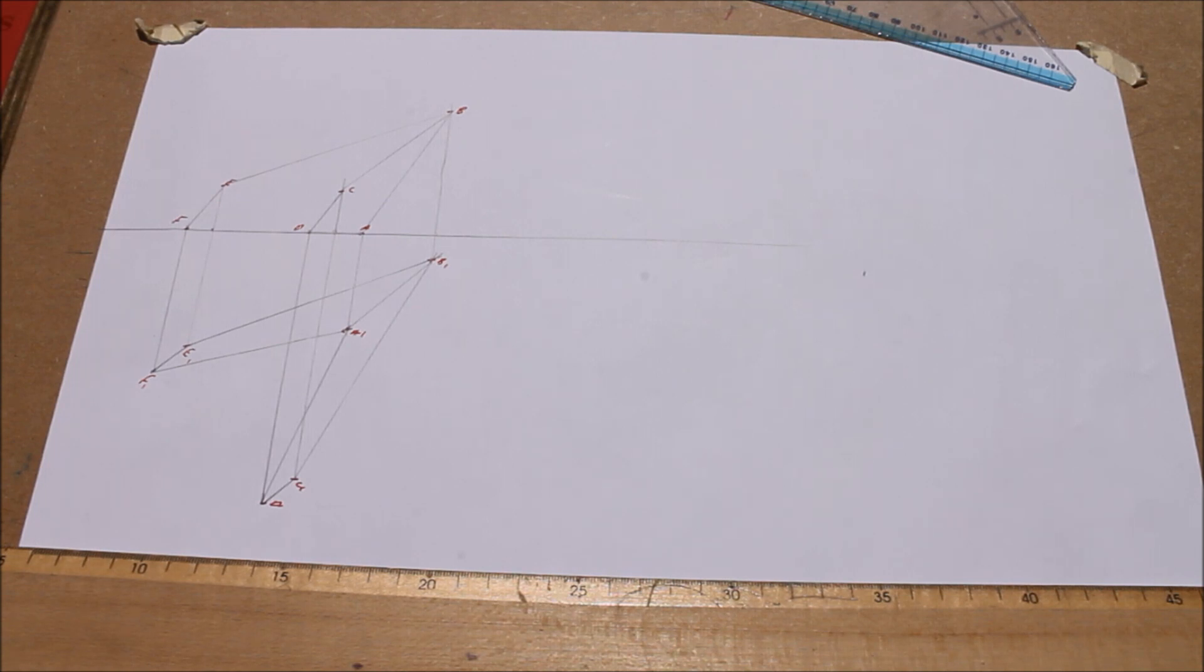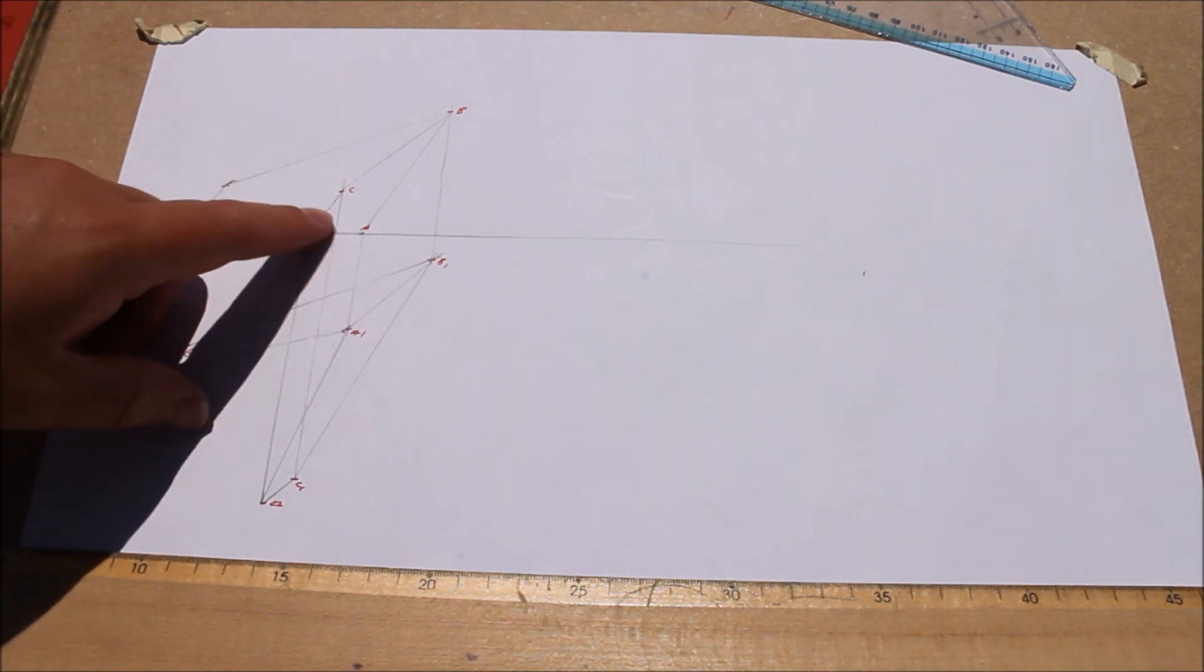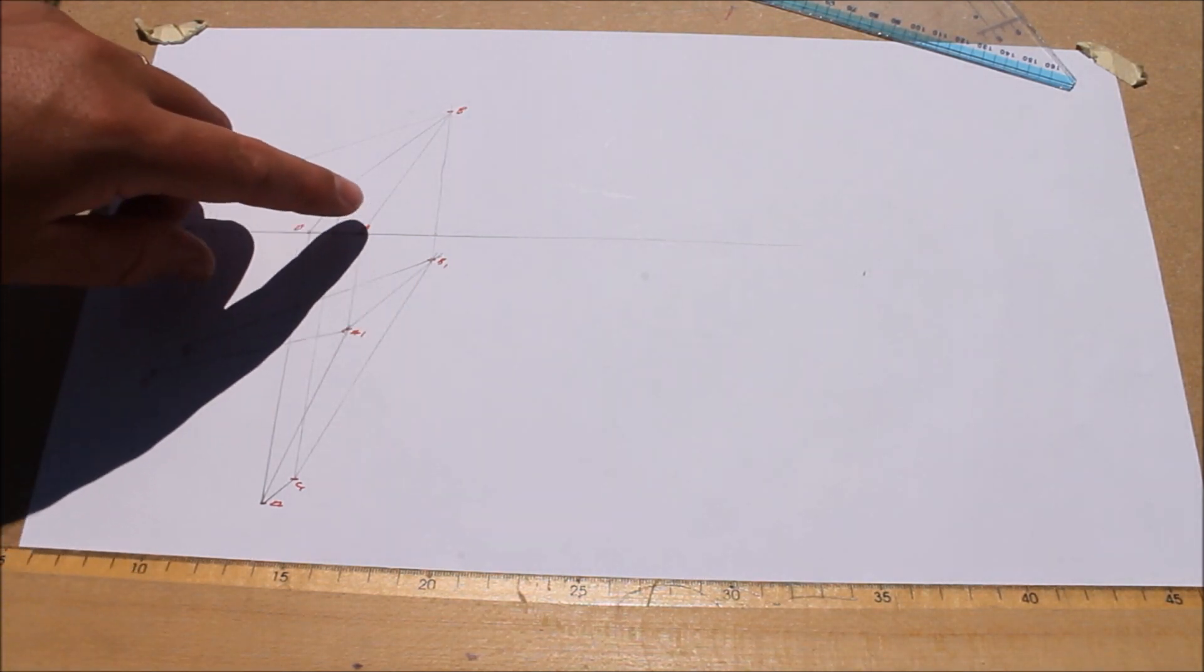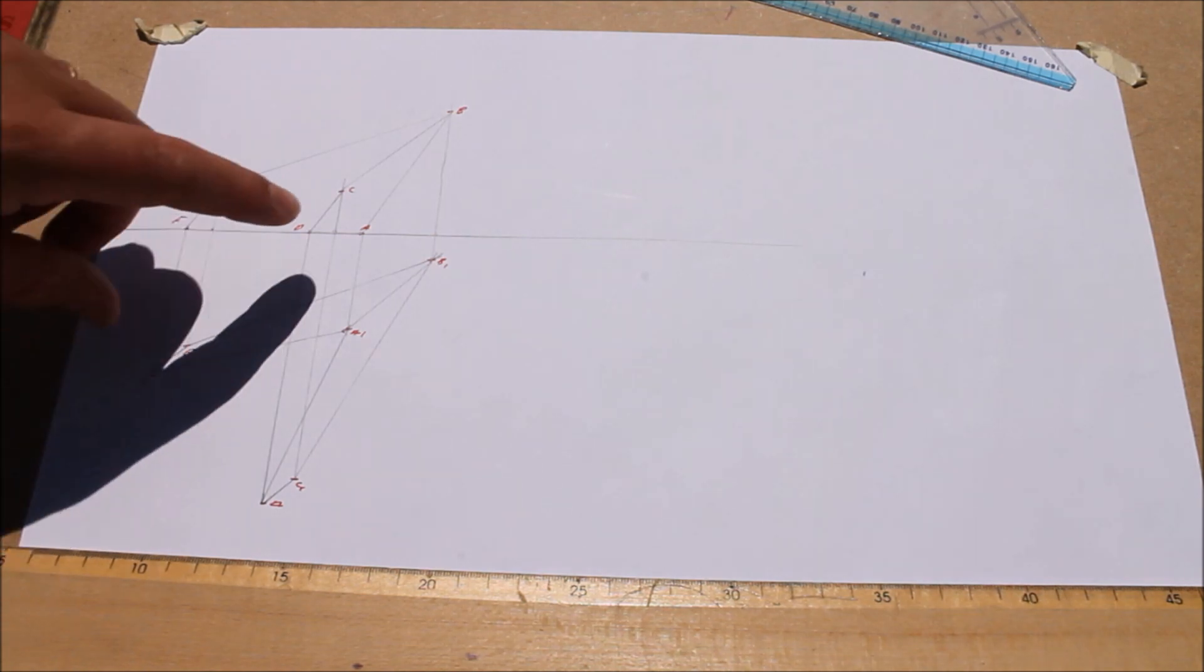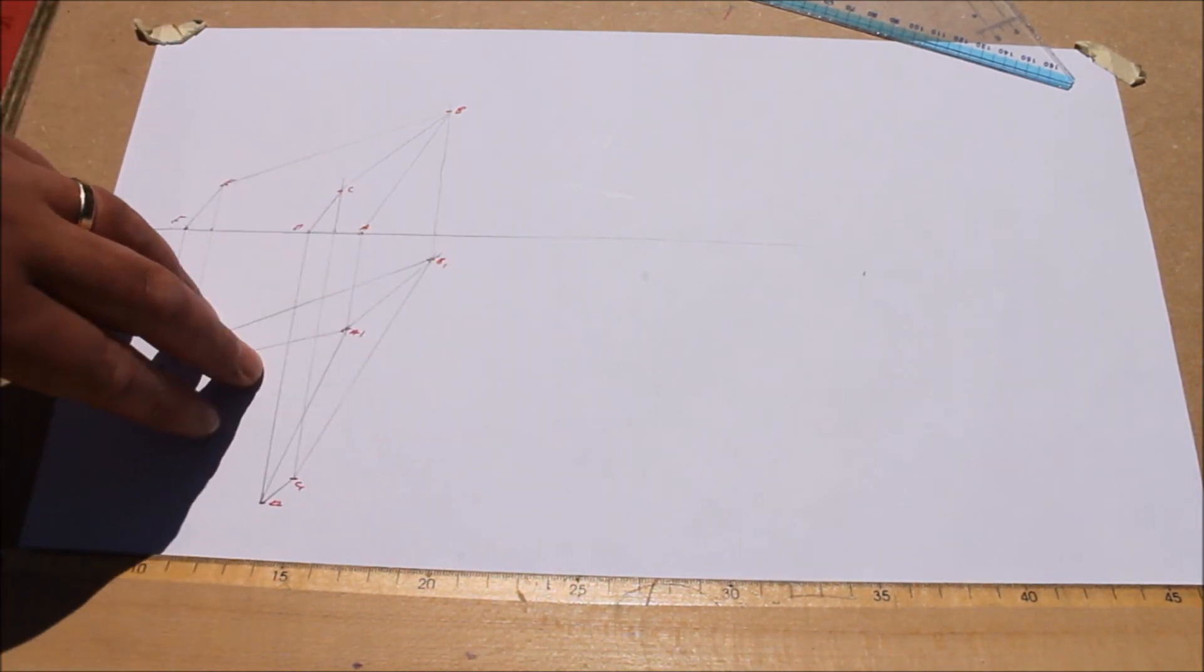Part B: determine the dihedral angle between the planes. It's handy because we already have our line of intersection, which is AB, and in both views there, in neither of them is it at true length. We don't have a true length in elevation because it's not parallel to XY, not in plan, and so on for the plan.